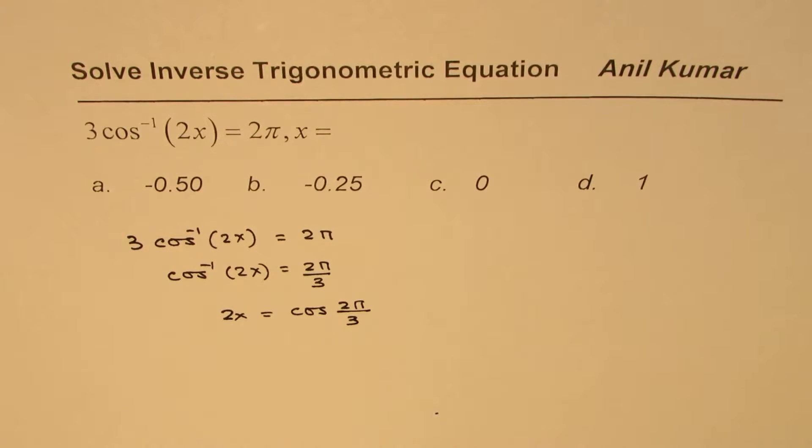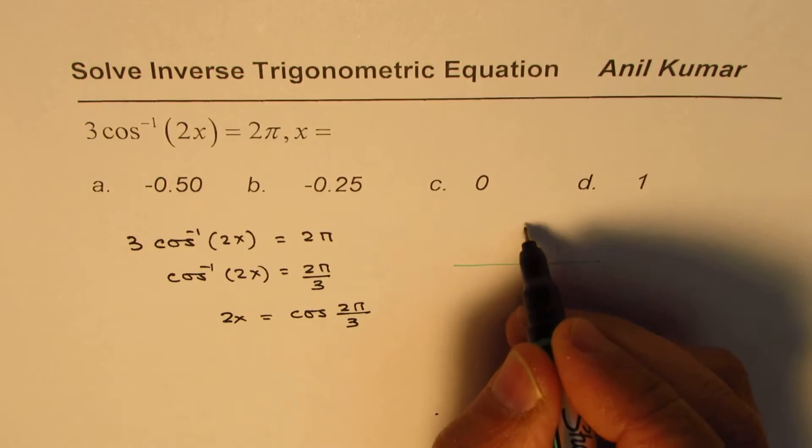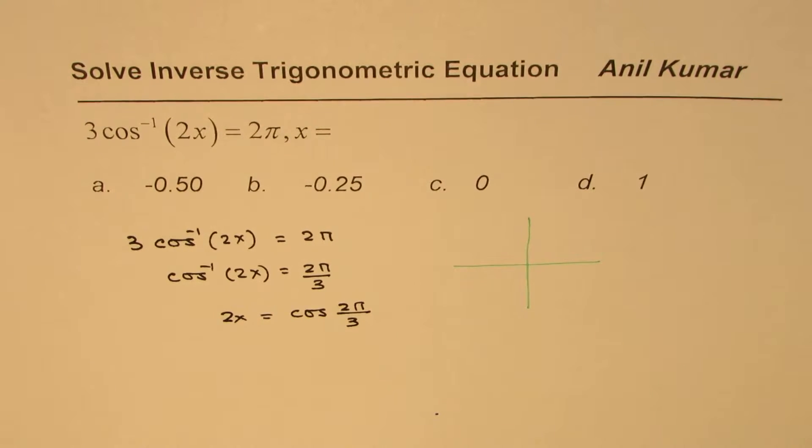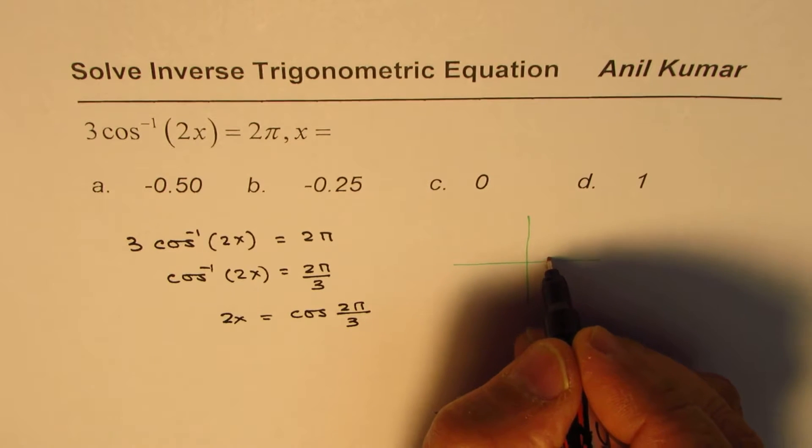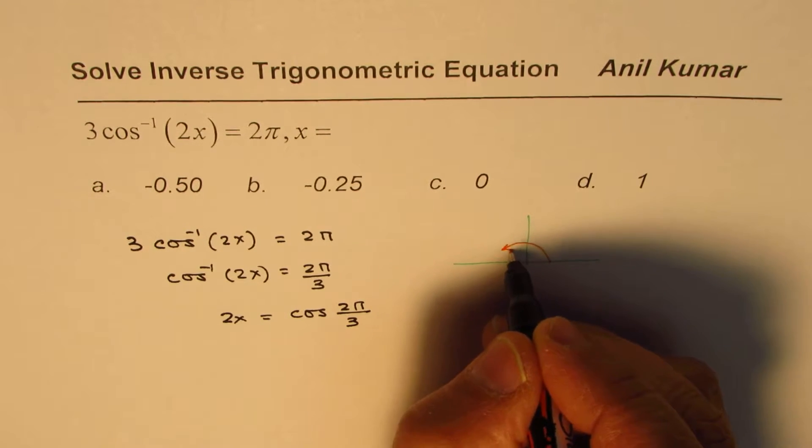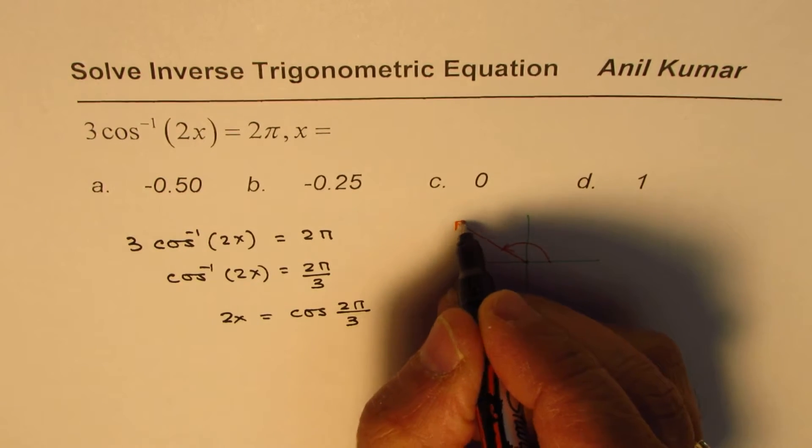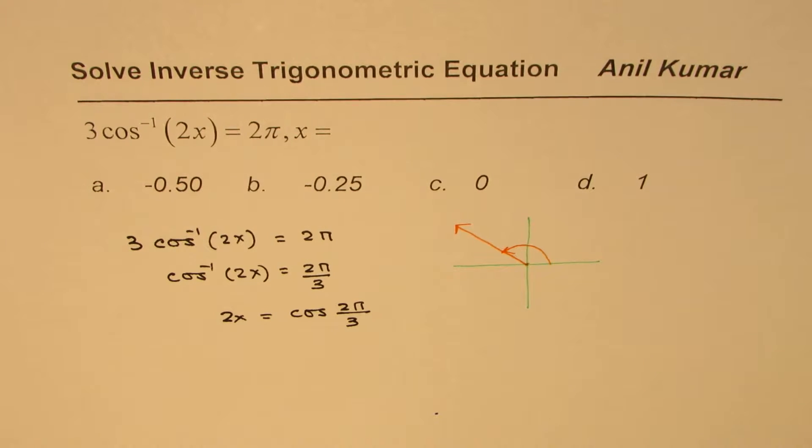Now we know what is cos of 2π by 3. We are looking for an angle which is actually in quadrant 2. So that is 2π by 3. We expect a negative answer.